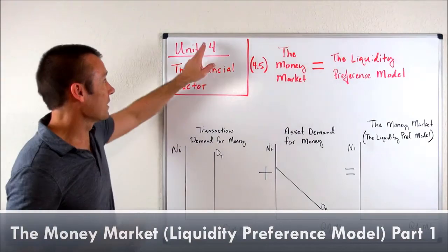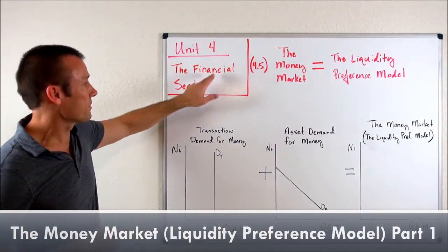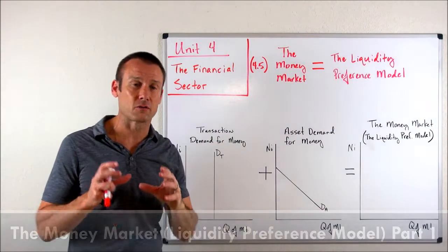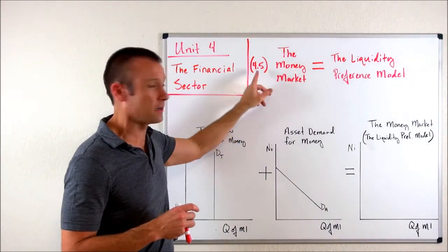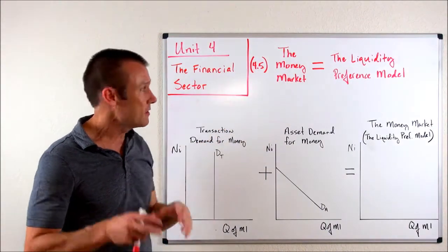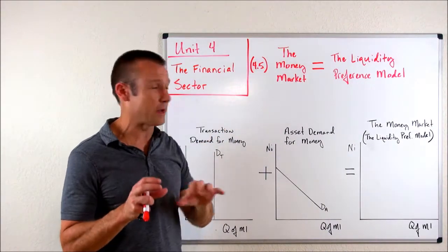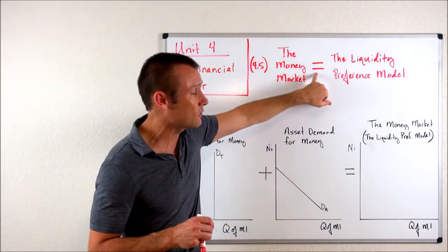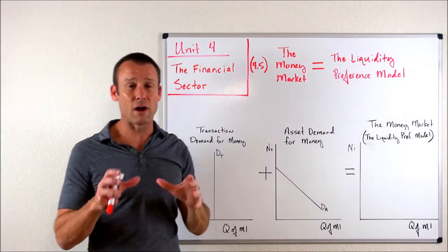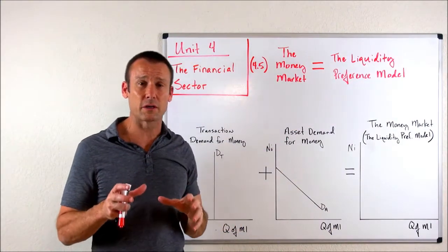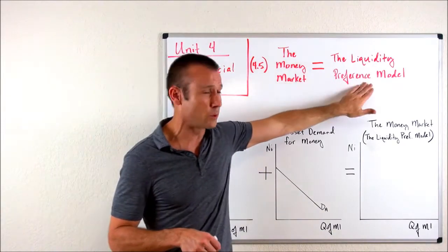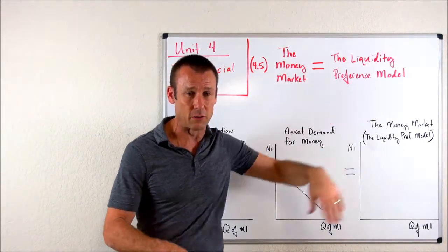Hey, everybody. Welcome back. We are on unit four, the financial sector. We're going to be studying a graph called the money market here in subunit 4.5. Right from the beginning, I want to point out to you we've got an equal sign — the liquidity preference model. The graph we're going to be learning in this video goes by two names: the money market and the liquidity preference model.